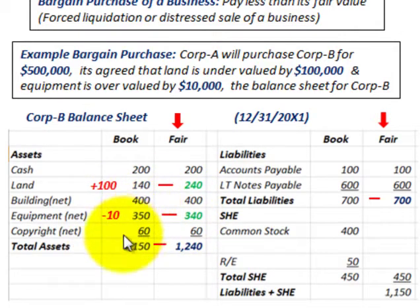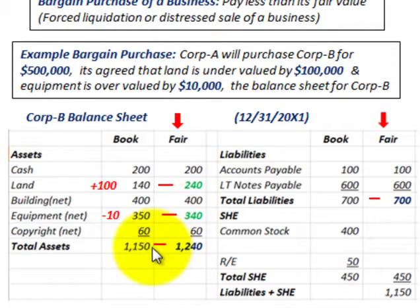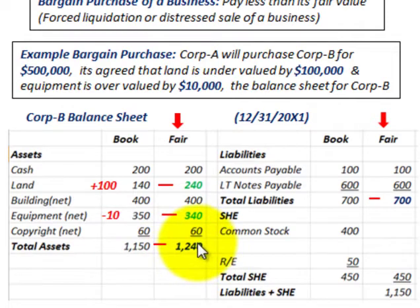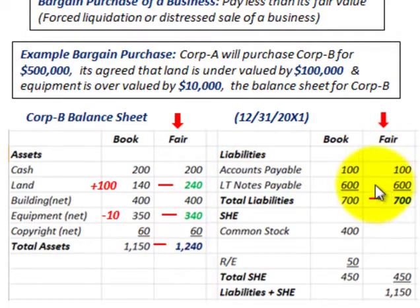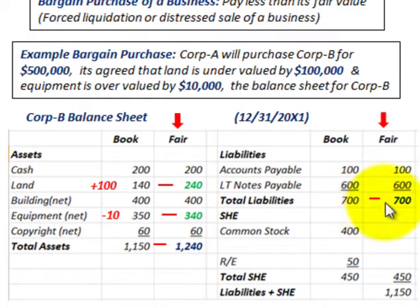The assets would have been increased from their book value of $1,150,000 up to a fair value of $1,240,000. The other thing we have to be concerned about is the liabilities. The book value and the fair value would have been the same for the total liabilities: $700,000.